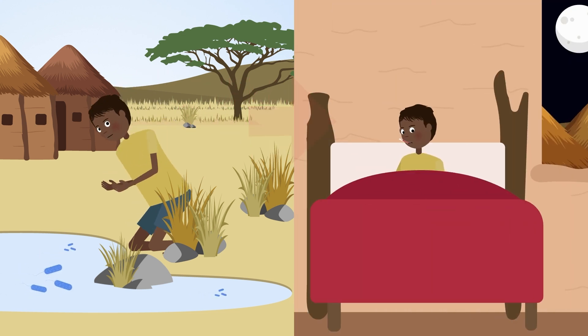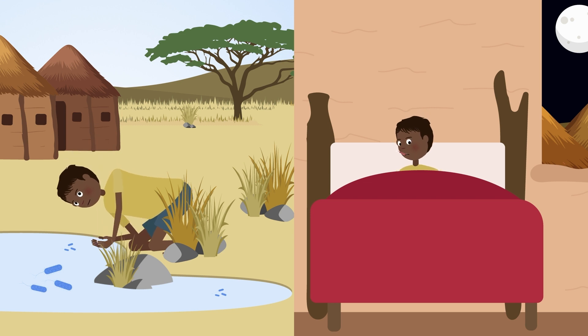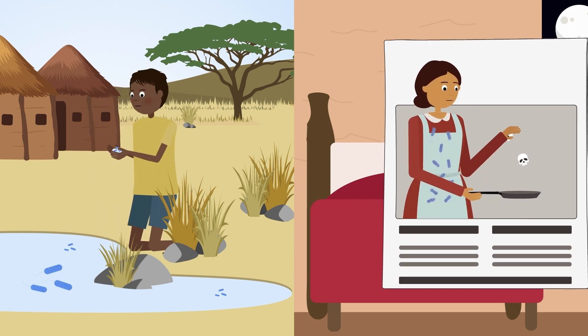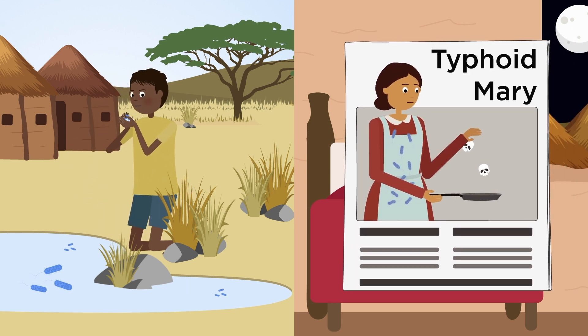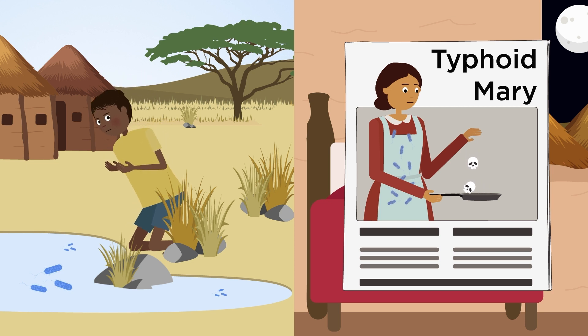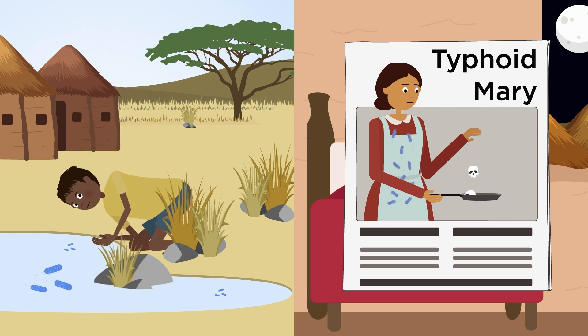Spread of disease is exacerbated by antibiotic resistance and chronic Salmonella carriers who don't know they're infected, but perpetuate the infection cycle by contaminating the food chain.